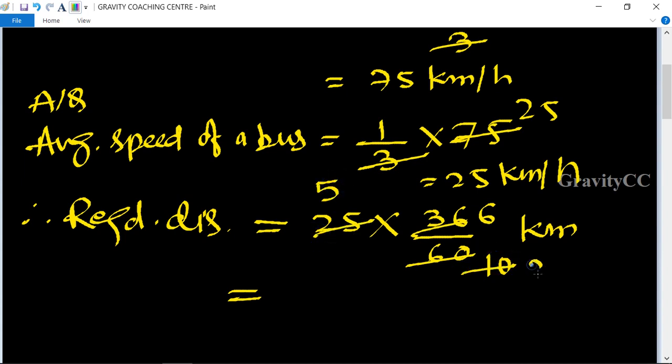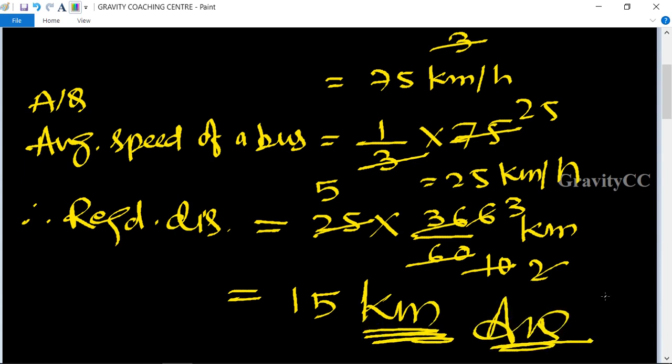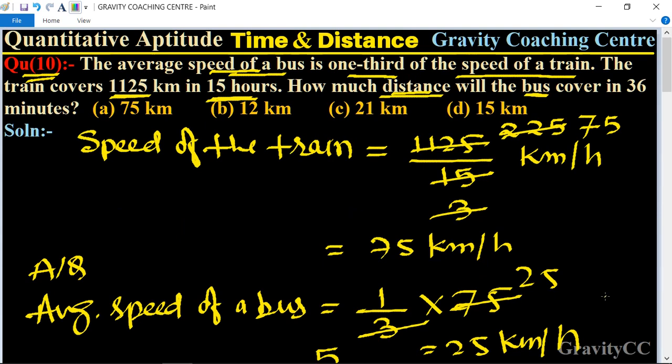25 divided by 5 is 5, 2 times 3 is 6, so 5 times 3 is 15 kilometers, which is the required answer. So option D is the correct answer.